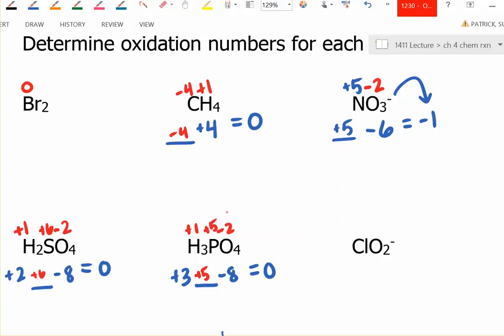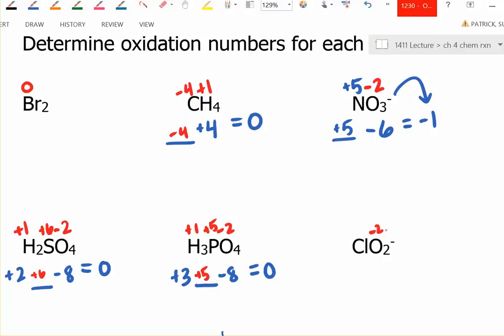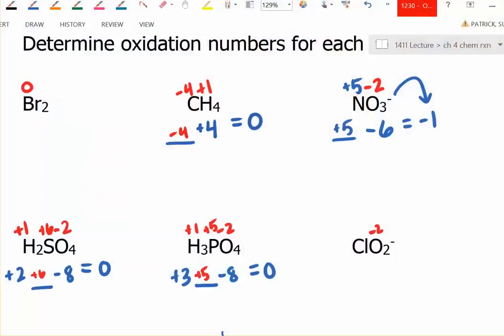This looks like chlorite. On this one, I know oxygen is minus two. I know that these numbers will add up to negative one. Then from this charge, if it's a polyatomic ion, the sum of the oxidation numbers will give you the charge of the polyatomic ion, not a neutral compound.